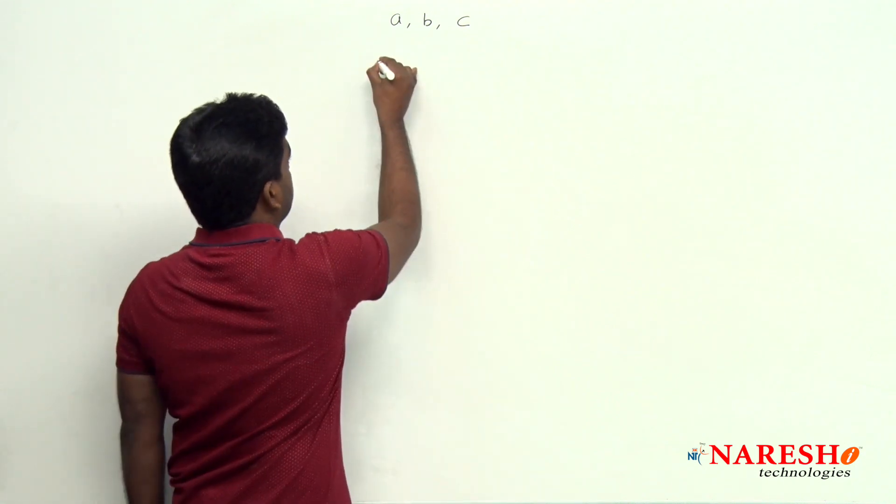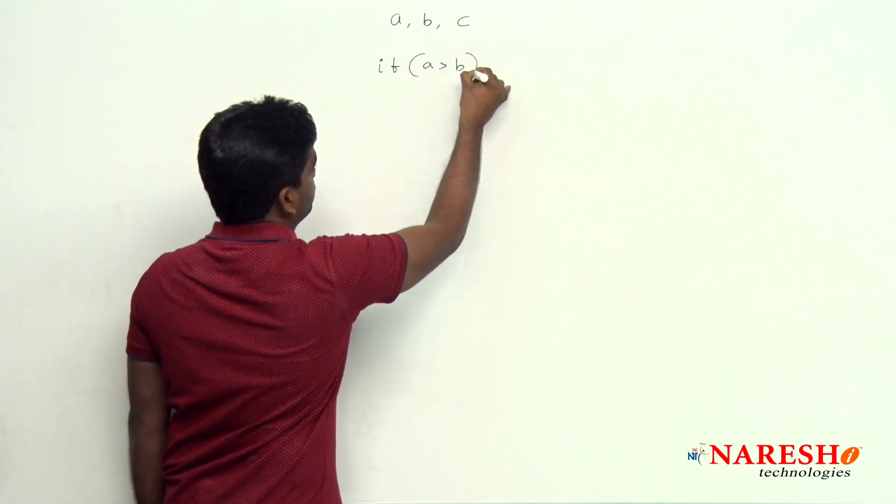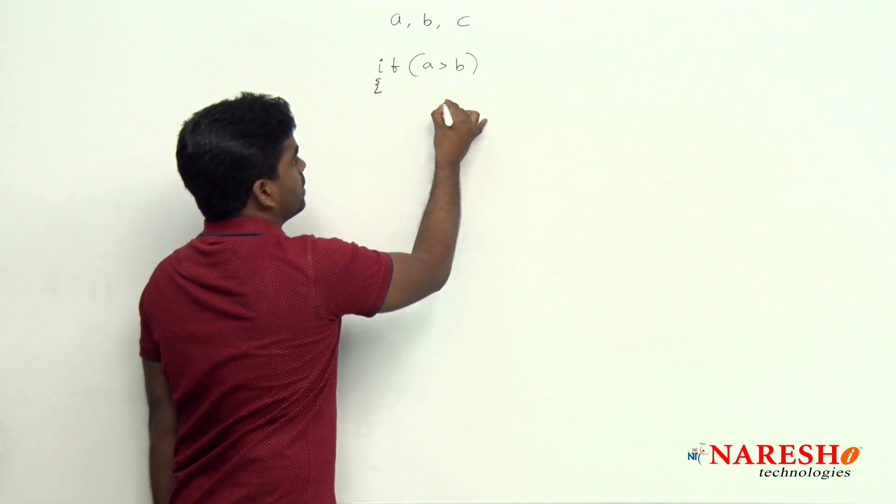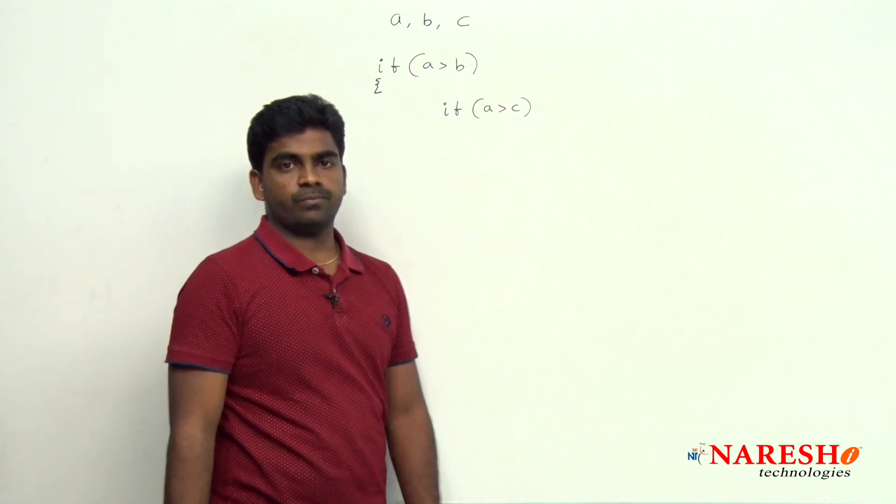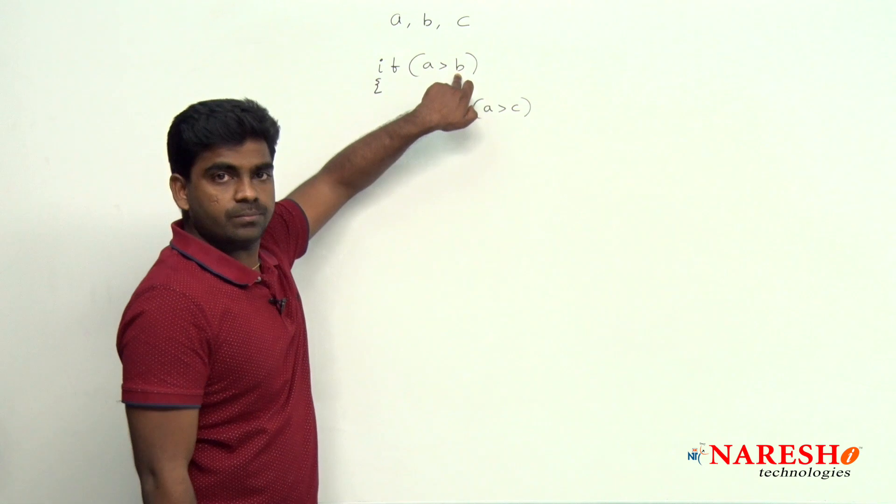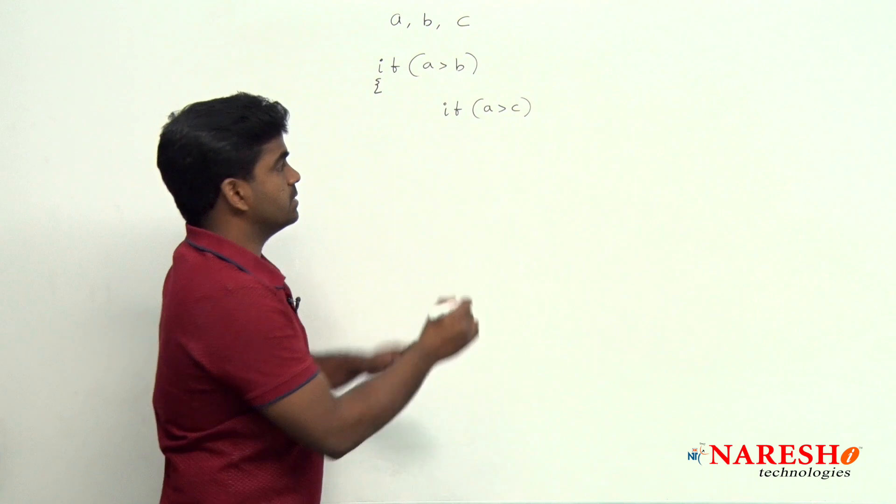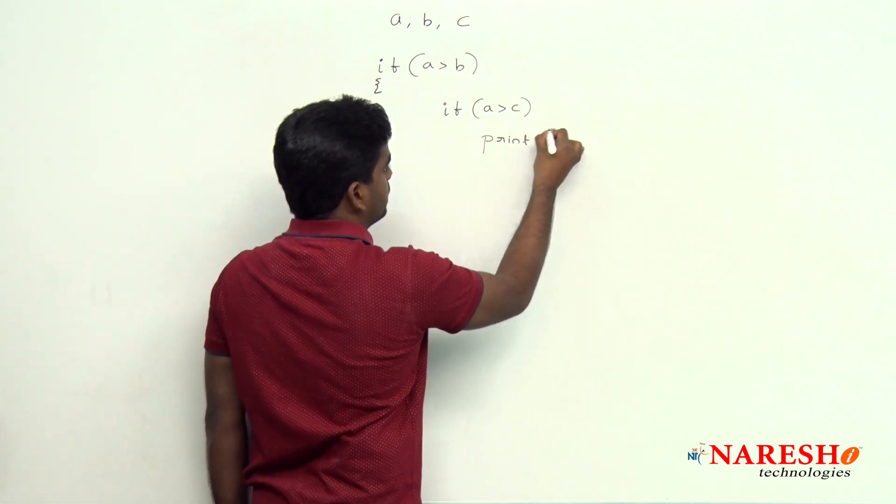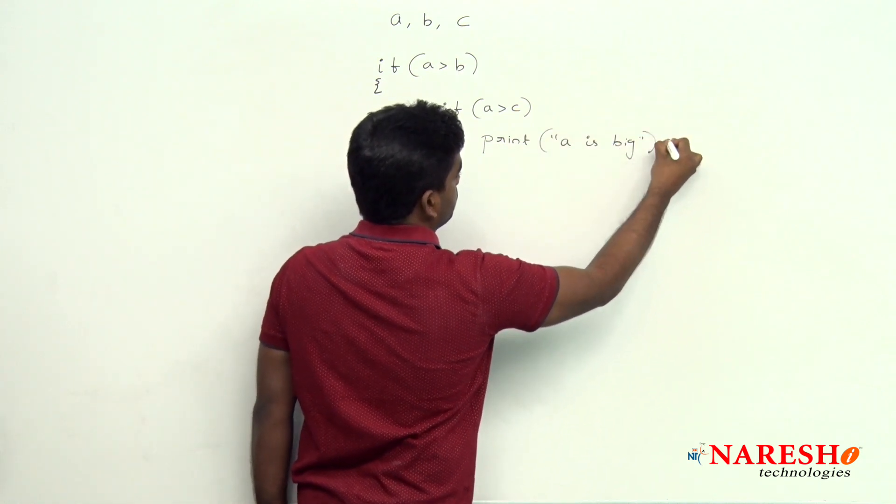Here nested if means what? Instead of using logical operator, we are using if a is greater than b, if this condition is true, it will go inside and check if a is greater than c. If both conditions are true, a is greater than b and c, so then directly we can print a is big.